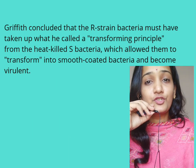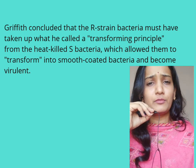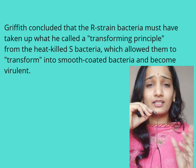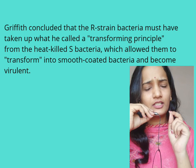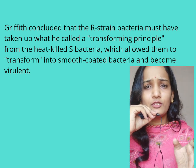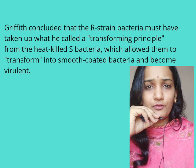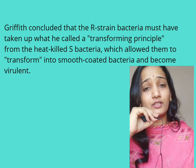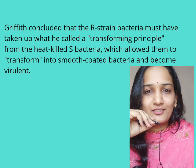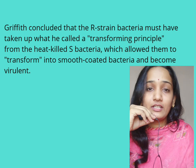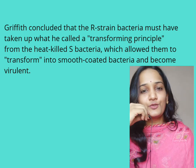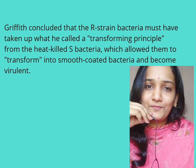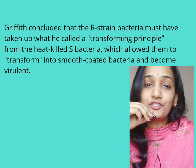He concluded that transformation had taken place. He didn't know the factor — it may be protein, it may be RNA, it may be DNA — because at that time it was not discovered that DNA is a genetic material, but there is one factor which can be transferred from one generation to another. Griffith couldn't understand the cause of bacterial transformation, but later on Oswald Avery and his colleagues discovered that the genetic material is DNA. So here our Griffith experiment is over. Let's see in the next lecture Hershey and Chase's experiment.